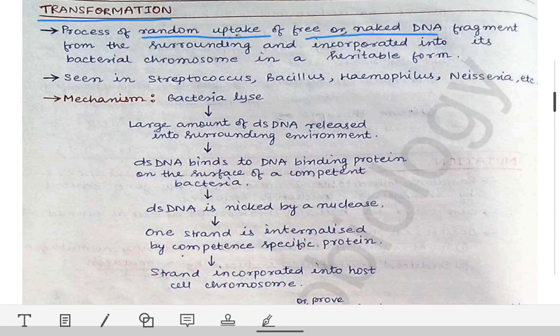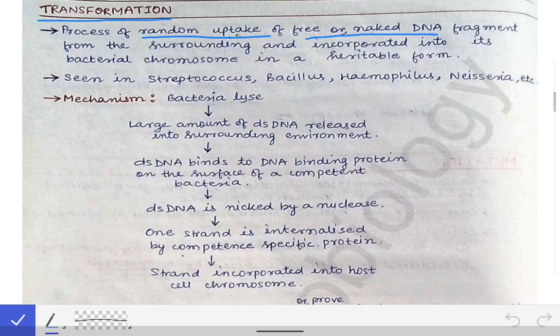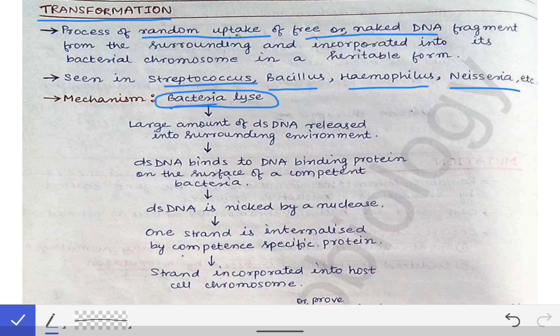This is a diagrammatic representation of transformation. Now we'll see where this transformation occurs and what the mechanism is. Transformation is seen in bacteria like Streptococcus, Bacillus, Haemophilus, Neisseria, etc. The mechanism is that once a bacteria gets lysed, a large amount of double-stranded DNA is released into the surrounding environment.